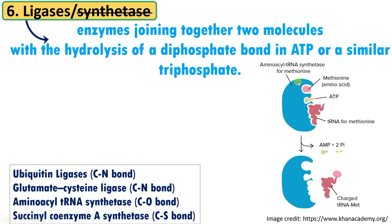Let's take the example of aminoacyl-tRNA synthetase — specifically the enzyme for methionine. The function of this enzyme is to combine a tRNA to its corresponding amino acid, methionine. ATP is used, and ATP becomes AMP and two pyrophosphates. That energy is used to combine this tRNA to methionine, forming charged methionine-tRNA. So this enzyme catalyzes the joining of tRNA to its corresponding amino acid.